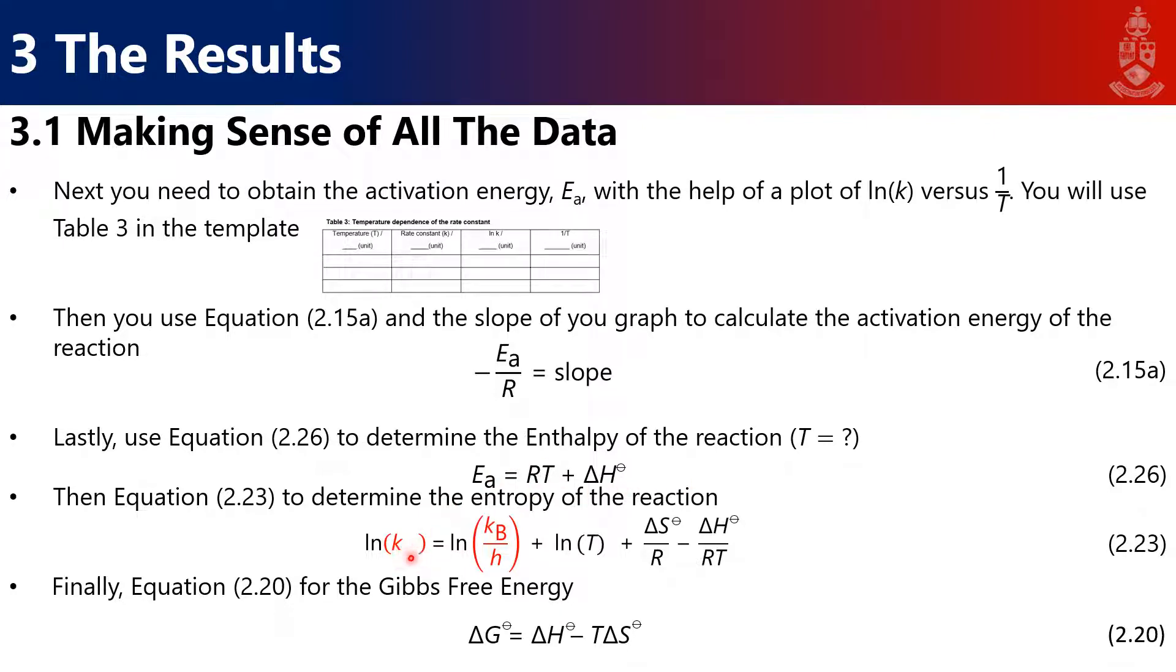Then we're going to use equation 2.23 to calculate delta s, the change in entropy for this reaction. And then you can use the Boltzmann constant, the Planck constant. All these things are listed in your PAC manual as well, but I'm just guiding you through the process. And you plug in your delta h that you've just calculated, your r and your t. Again, t is still the same thing. We're at 25 degrees Celsius. But you work in Kelvin. And you get delta s. Then finally, you can calculate the Gibbs free energy using delta h minus t delta s.